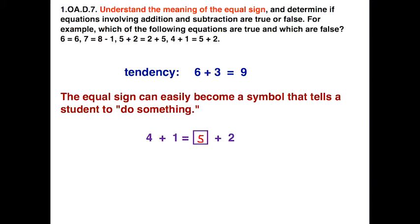Students might say, well, 4 plus 1 is 5 — they fill that into the answer box and think they are done and that it is correct. When in fact they totally forgot about that plus 2, and consequently this is a false statement. In fact, what some students might do is add another equal sign and say 5 plus 2 is equal to 7. So that's a good indication that there's some confusion here, and students have, in fact, lost the meaning of the equal sign.